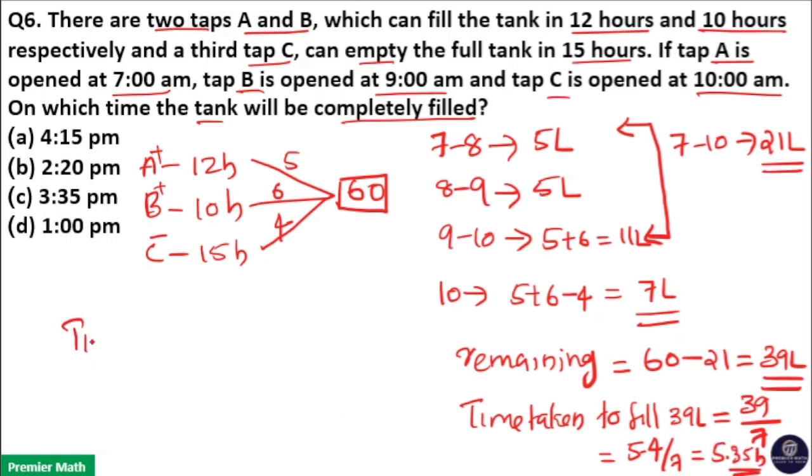So, here time will be 10 plus 5:35 hours, 10am plus 5:35 hours, which is equal to 3:35 pm. So, at 3:35 pm, tank is filled. So, option C is your answer.